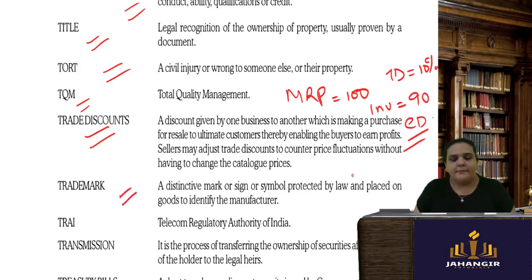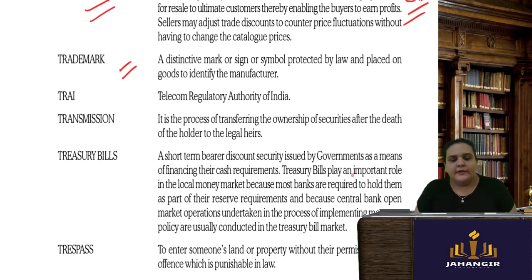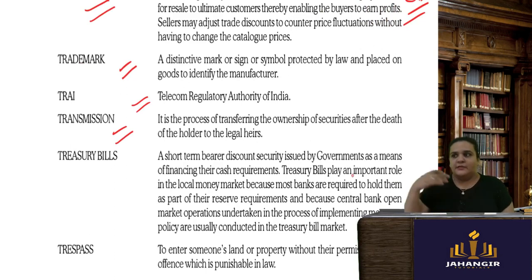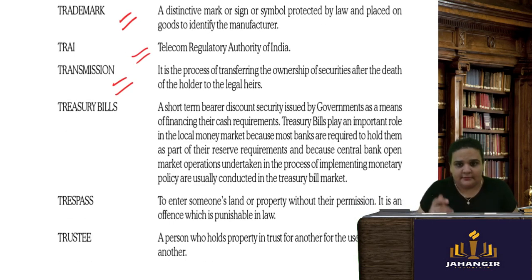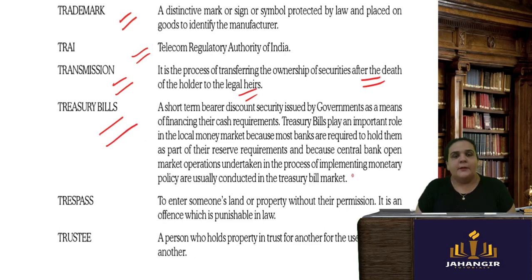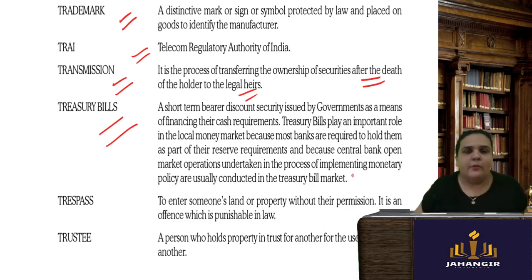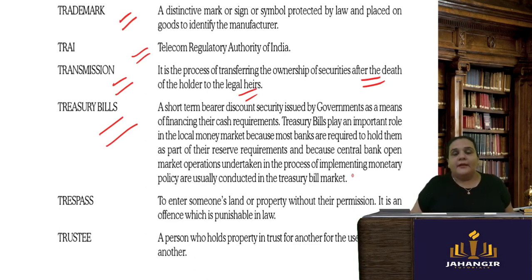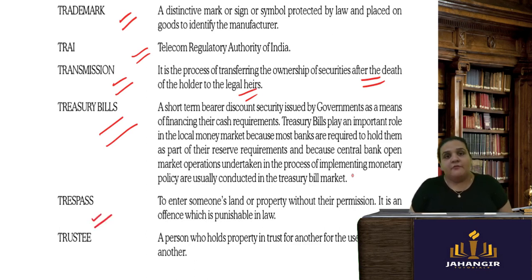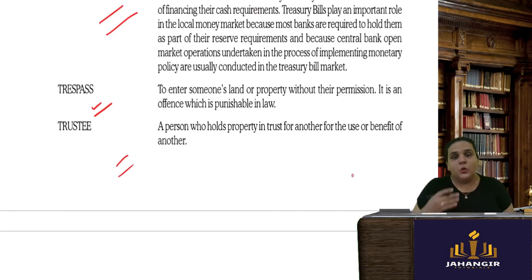A trademark is an assigned symbol or brand to identify a product. TRAI stands for Telecom Regulatory Authority of India. Transmission is transferring ownership of a security due to the death of the legal owner to the legal heirs. Treasury bills are short-term instruments issued by the government to finance cash requirements — the most secured form of security in the money market, regulated by the RBI and part of the money market, not the financial market.